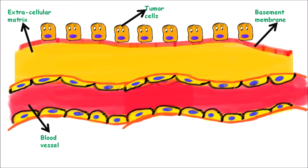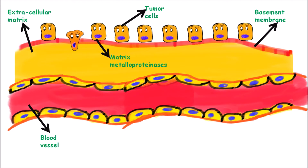Next, these tumor cells secrete a type of protein enzyme known as matrix metalloproteinases, or MMPs. The function of MMPs is to break down the basement membrane and the extracellular matrix. After breaking down the basement membrane and the extracellular matrix, certain holes are created, and the epithelial cells squeeze through those holes, enter into the extracellular matrix, and then move towards the blood vessel.